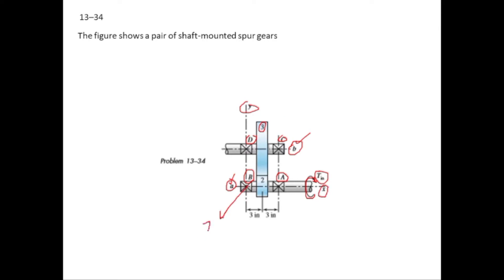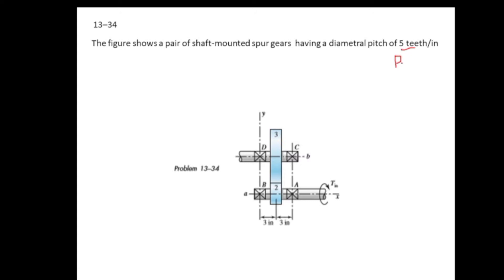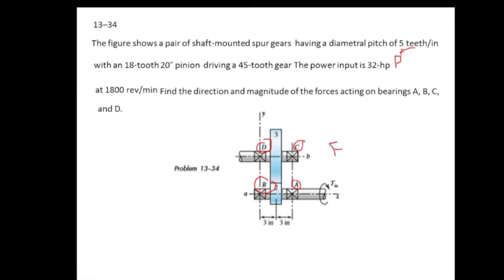For this spur gear arrangement, the diametral pitch is 5 teeth per inch. There are 18 teeth on gear two with a pressure angle of 20 degrees, and 45 teeth on gear three. The input power on shaft A is 32 horsepower and shaft A is revolving at 1800 rpm. We have to find the reaction forces at bearings A, B, C, and D.